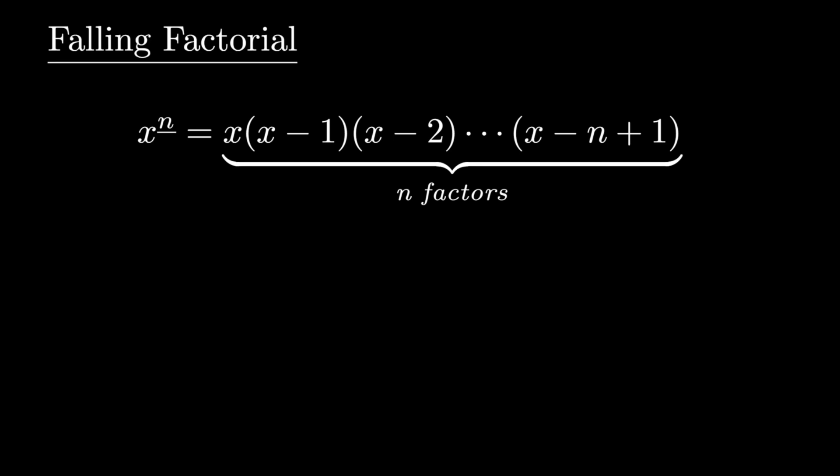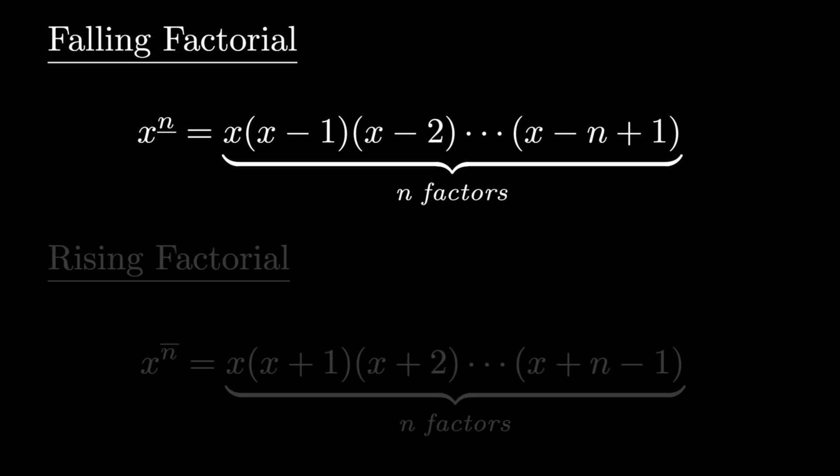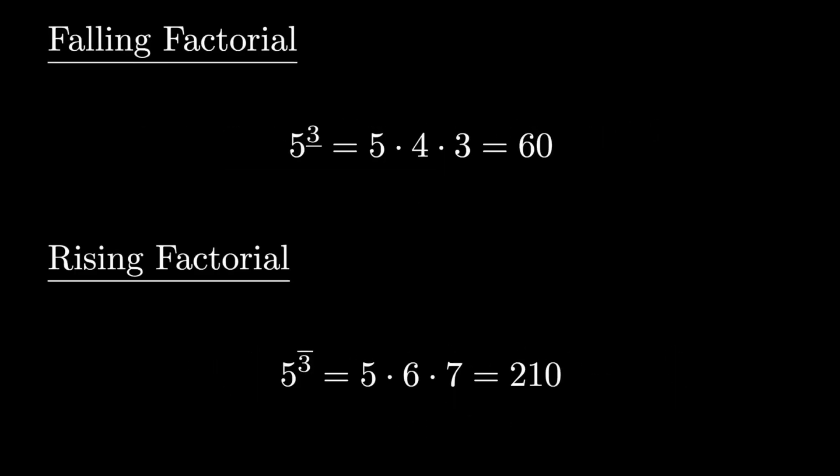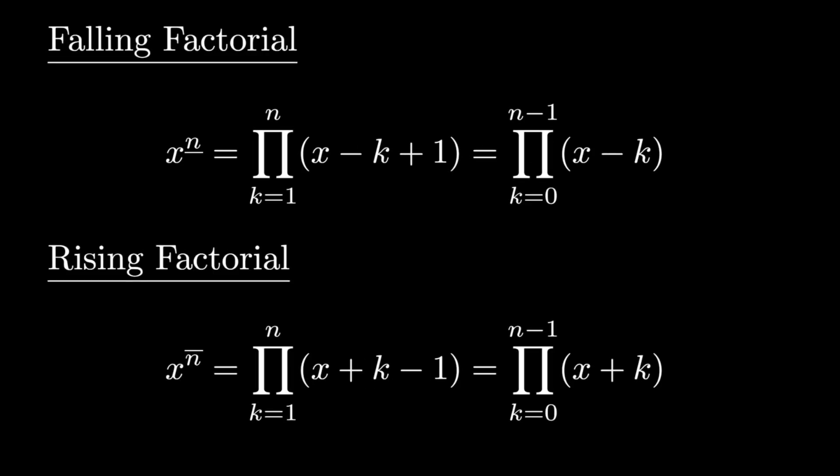The falling factorial is the product of n consecutive decreasing integers starting from x, and the rising factorial is the product of n consecutive increasing integers starting from x. The definition of each can be converted to product form.